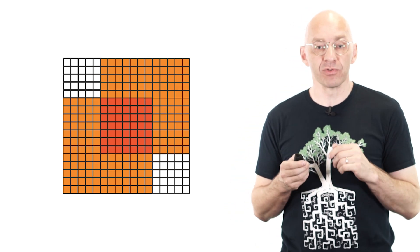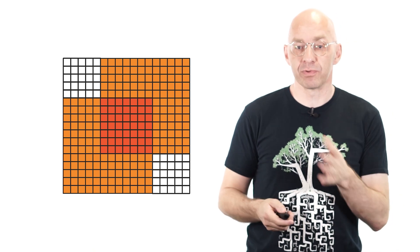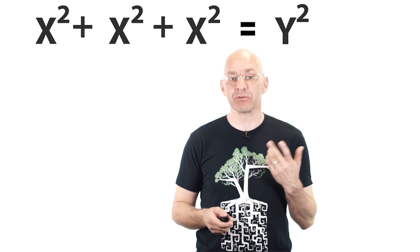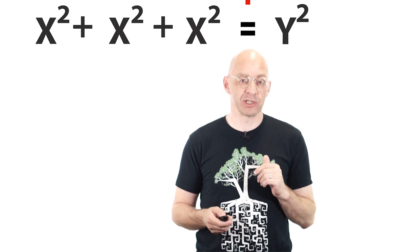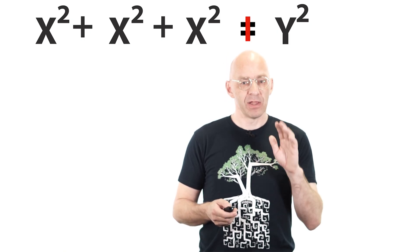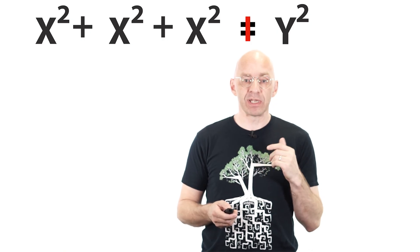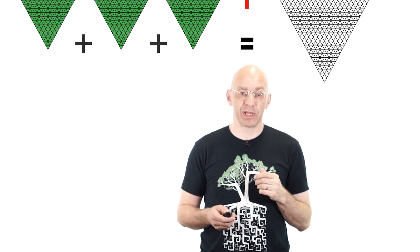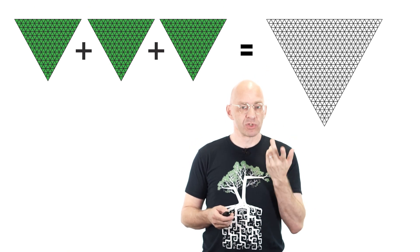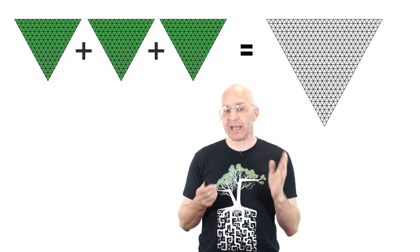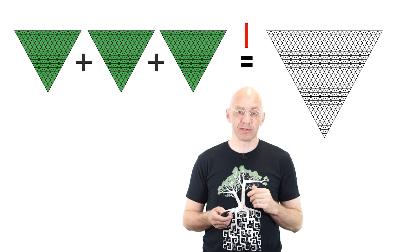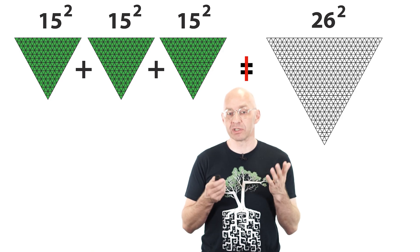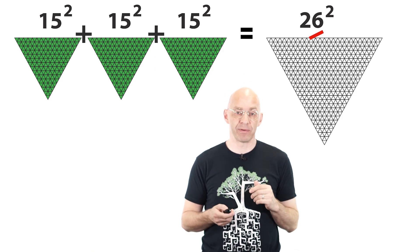Remember by proving that root 3 is a rational we also prove that the equation x squared plus x squared plus x squared equals y squared has no positive integer solutions. This means that the three green triangular squares together and the y triangular square that I used to illustrate the proof actually cannot have the same number of mini triangles. In fact, I chose the numbers on the left and right to be as close as possible, differing by just one.